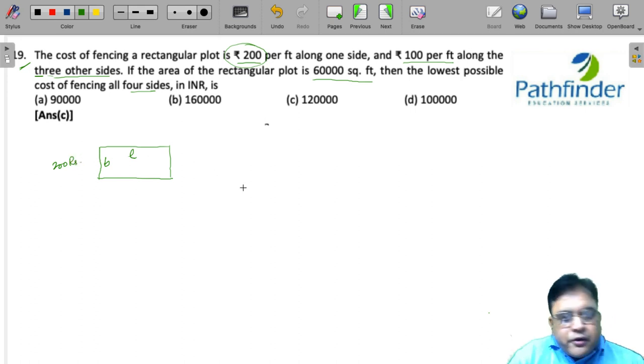So, you require 200 rupees of fencing on one side and the cost of fencing for all the three sides, other three sides, is 100 rupees each. What is the overall cost of fencing? This is 200 rupees per feet, so 200 times B plus 100 times L plus 100 times L plus 100 times B.